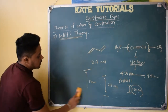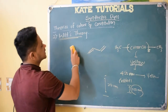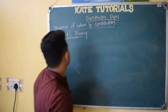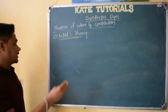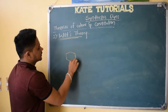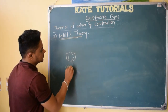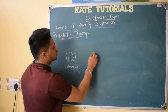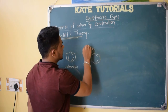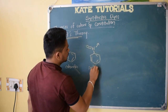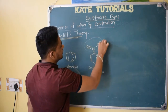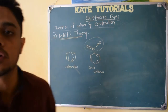So this is Witt's theory. In Witt's theory, he told that color is due to chromophores. Initially benzene was colorless. When I added the nitro group — NO₂ — it became pale yellow. This is because of this chromophore. Chromophores are substances having multiple bonds.